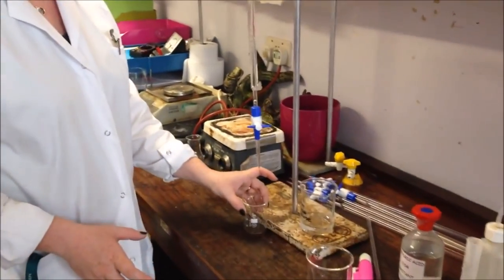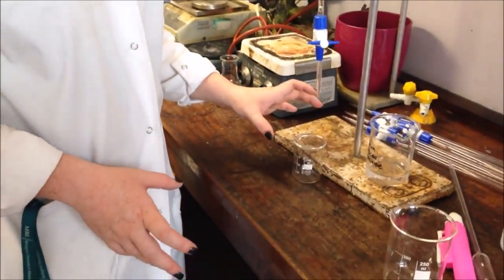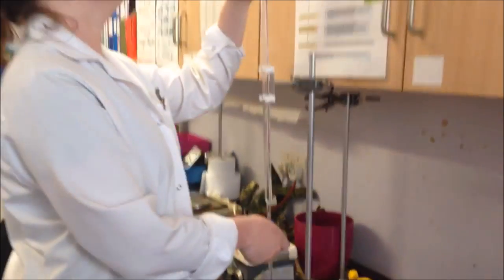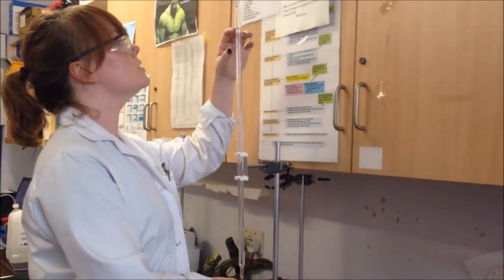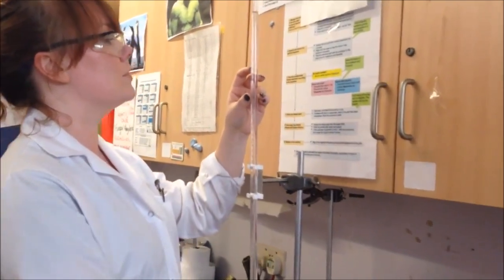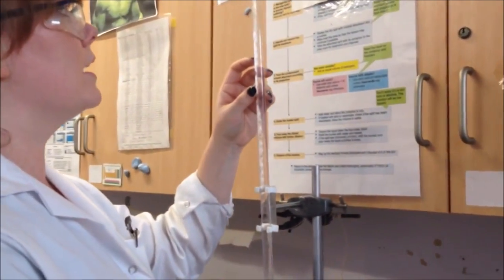For the iodine clock, the first thing we need is 10cm³ of hydrogen peroxide, and I'm going to measure this out using a burette. I'm going to see what the initial reading is, work out where I need to get to for the end point, and then run it through into the beaker.